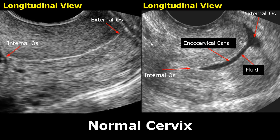These are transvaginal images of the cervix in longitudinal view. The internal os is the junction between the body of the uterus and the cervix. It is the upper part of the cervix and will be seen on the left side in the image. The external os is the junction between the cervix and the vagina, and will be seen on the right side. The area between the internal os and the external os is the endocervical canal.